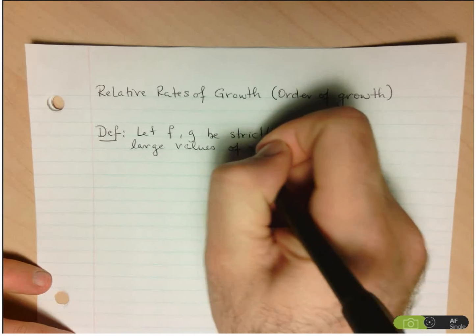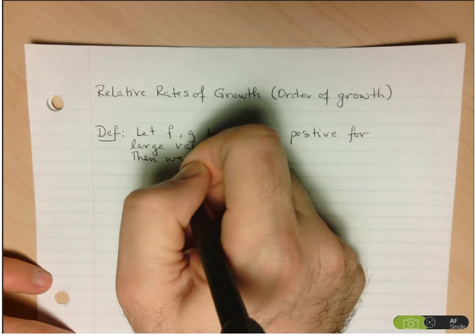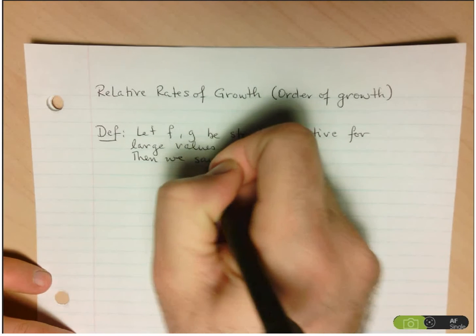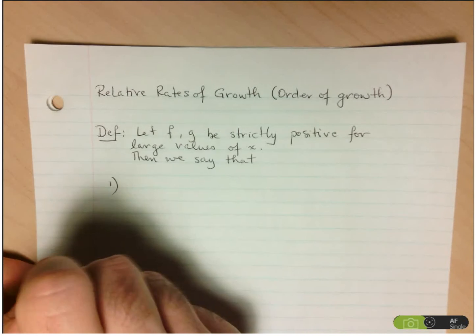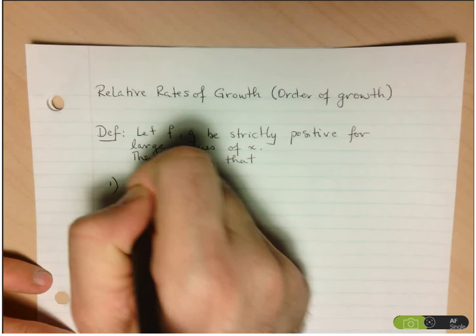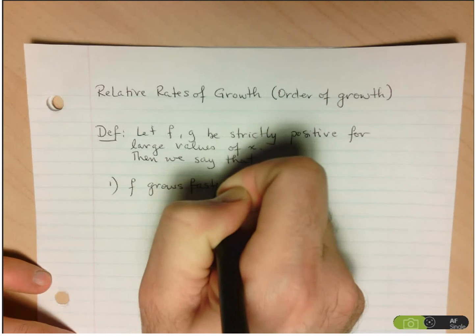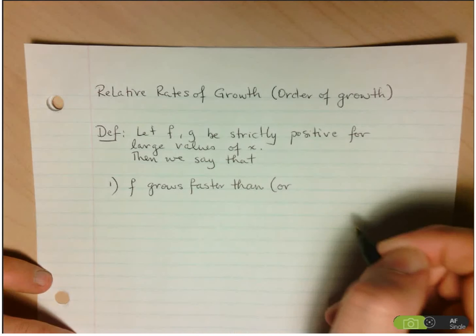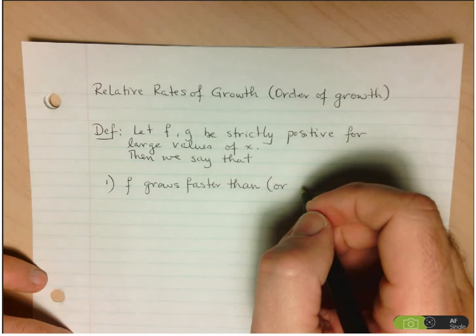And since we're talking about end behavior, we're really only interested for large values of x. Then we say that f grows faster than g. So we'll start with that. We'll call that number one. We'll say that f grows faster than g, or, and probably a better term for it, we say that f has a higher order of growth.